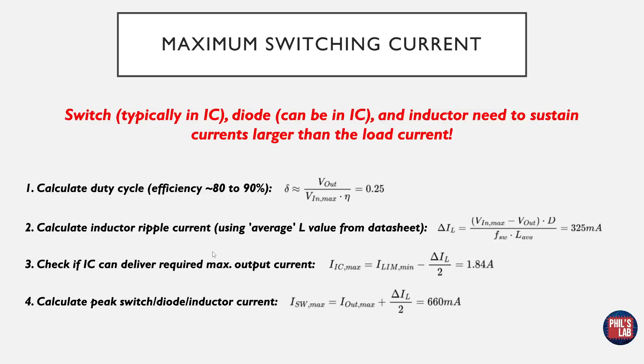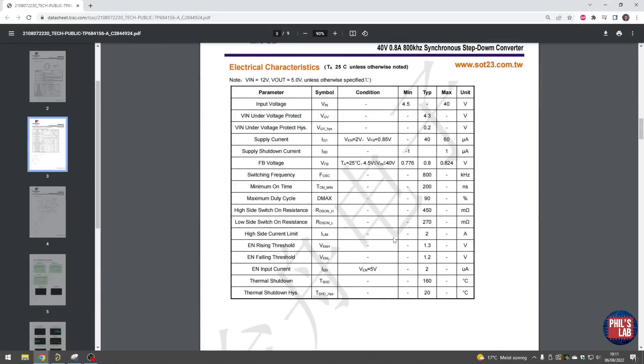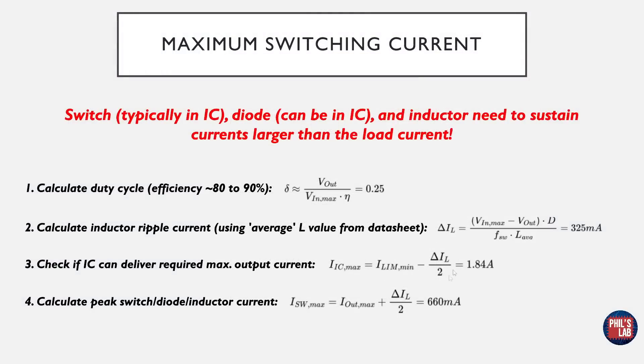Next, we need to check if the IC we chose can deliver our maximum output current, also given this ripple current. For this, we need to go to the datasheet again, and this will be in any switching regulator or buck converter datasheet, and this is the high side current limit, or ILIM. And this is given as 2 amps. So 2 amps minus half the inductor ripple current, this value, which turns out to be 1.84 amps in our case, needs to be greater than whatever load current you have. And our load current in this example was half an amp, so we are well above that. And that's okay, that's great. So the IC can deliver the maximum output current with ease.